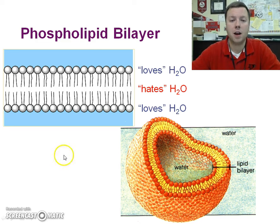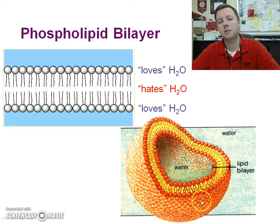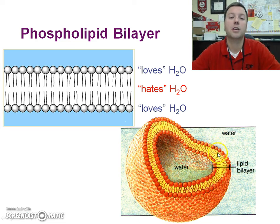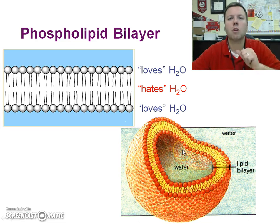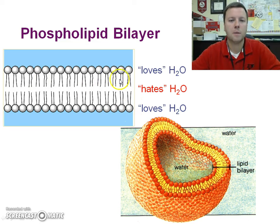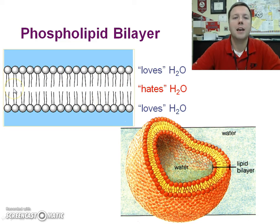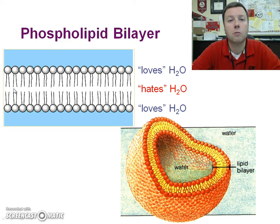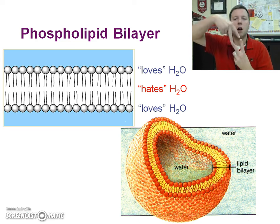Phospholipids form a bilayer — it's two-sided. You can see here in a cell, like a basketball cross-section cut out, there's water inside and outside. The inside is mainly the watery cytoplasm; outside is interstitial fluid. In this lipid bilayer, the outside and inside love water — those are the hydrophilic heads. The inside here hates water; those fatty acid or hydrophobic tails turn in on one another.